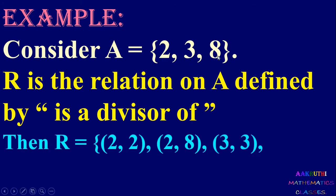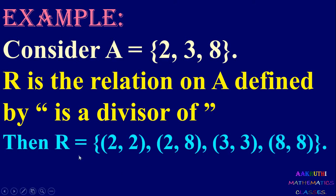Consider an example: let A equal to {2, 3, 8} and R is the relation on A defined by 'is a divisor of'. We start from 2: 2 divides 2 is true, so (2,2); 2 divides 3 is not possible; 2 divides 8 is possible, so (2,8). For 3: (3,3) is true; 3 divides 8 is not possible. For 8: 8 divides 8 is true, so (8,8). Therefore R = {(2,2), (2,8), (3,3), (8,8)}.